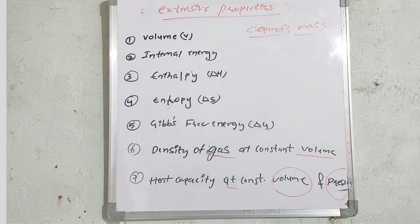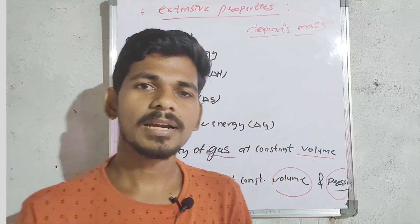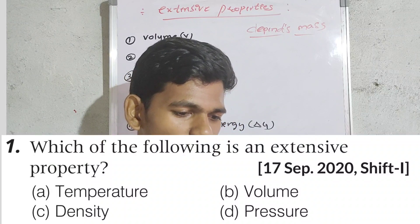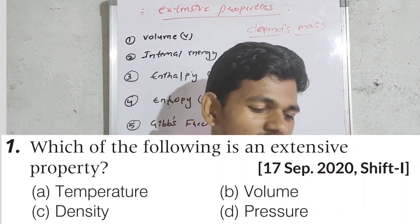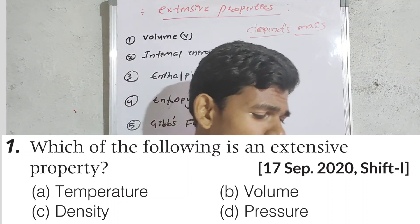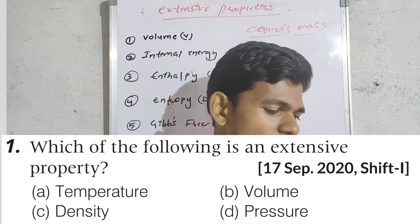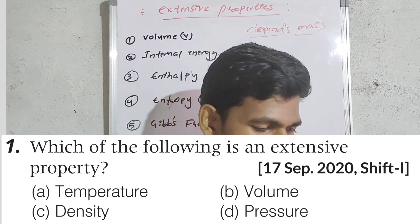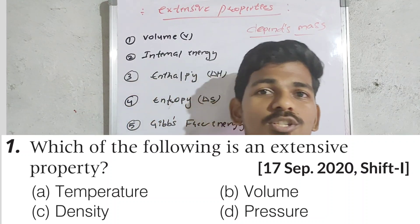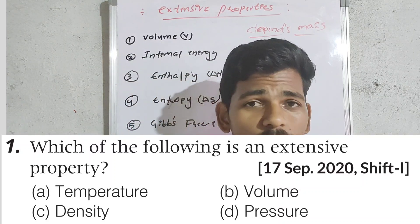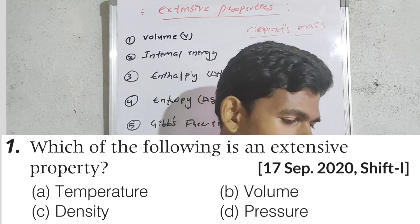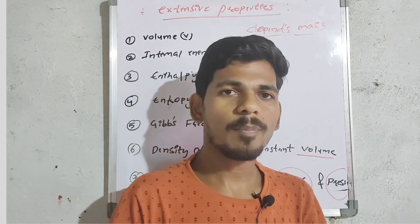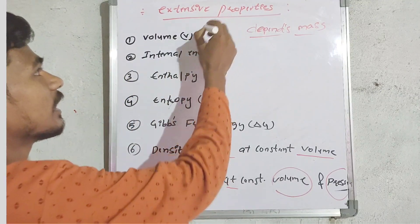Now we have questions. First question: Which of the following is an extensive property? This question was asked on 17th September 2020, Shift 1, AP MZ. Options: A) Temperature, B) Volume, C) Density, D) Internal pressure. Please pause the video and answer. The correct answer is B — Volume. Volume is an extensive property, as we can see from our list.